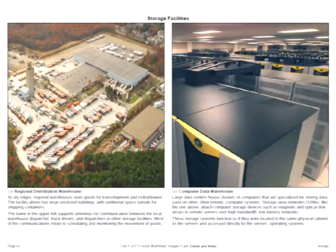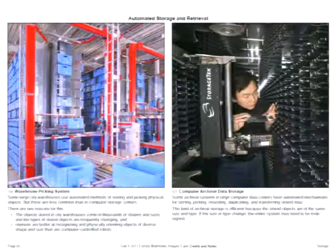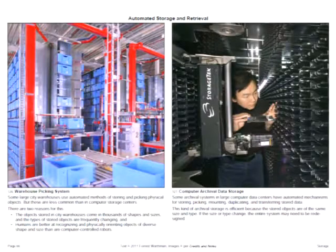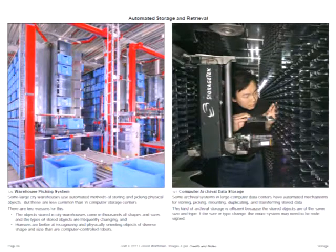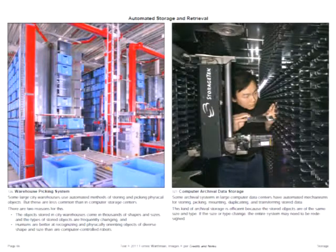Automated storage and retrieval is done in both cities and computers. The computer example on the right works better than the city example on the left simply because all storage devices are the same size and shape — a single module — which is much easier for a machine to handle. In a city warehouse, physical goods come in all kinds of shapes and sizes and frequently change. That's a hard problem to deal with.